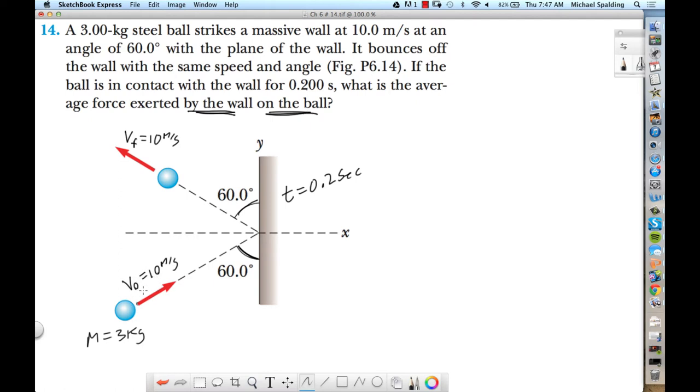So as the ball comes in, this initial velocity of 10, is this perfectly x? No. Is it perfectly y? No. So what do we have to do to that initial velocity? Break it into components. So this vector right here, that's Vx initial, that's Vx, and then there's Vy. Does that make sense?